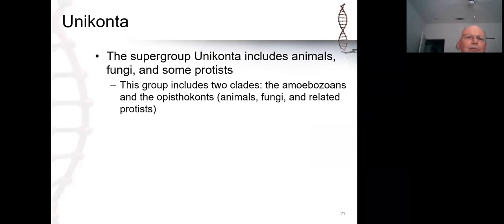The final supergroup is the group Unikonta, so named because they have a single flagellum on the flagellated stage. There are two clades within Unikonta: the amoebozoans, which are the classic amoebas, and the opisthokonts. The opisthokonts contain both the protist ancestors of the animals and fungi, and also the animals and fungi as clades. We will talk about the protist relatives of the animals and fungi later, but we will talk about the amoebozoans in more detail now.